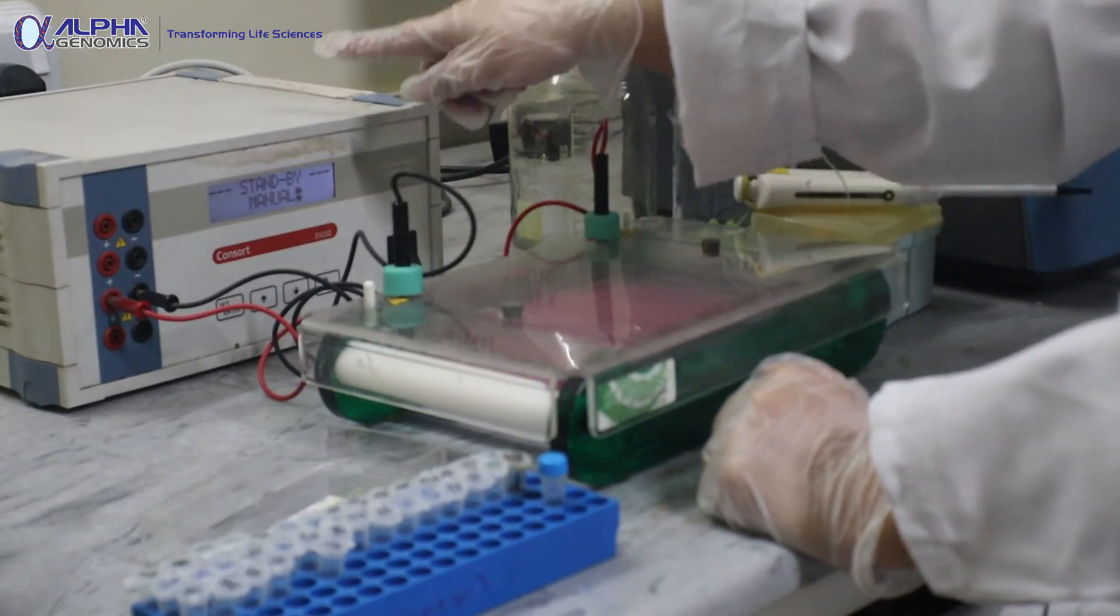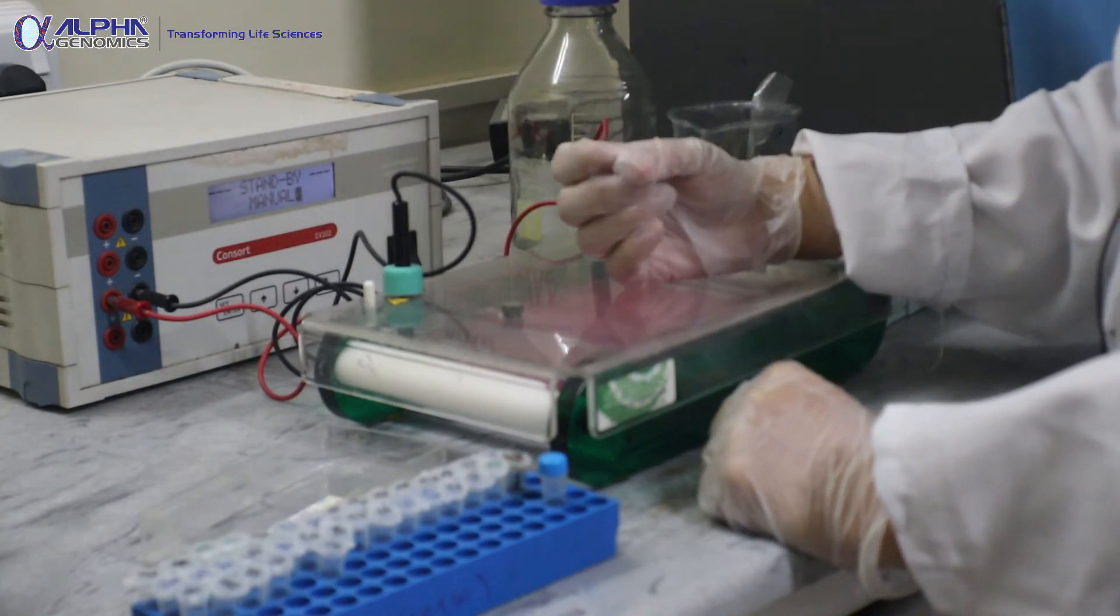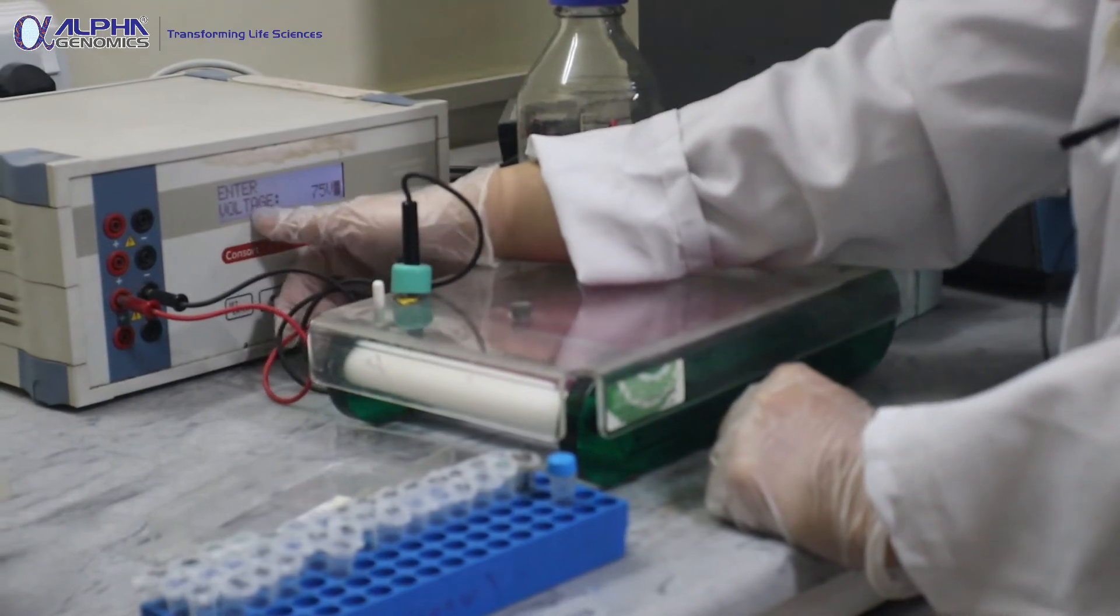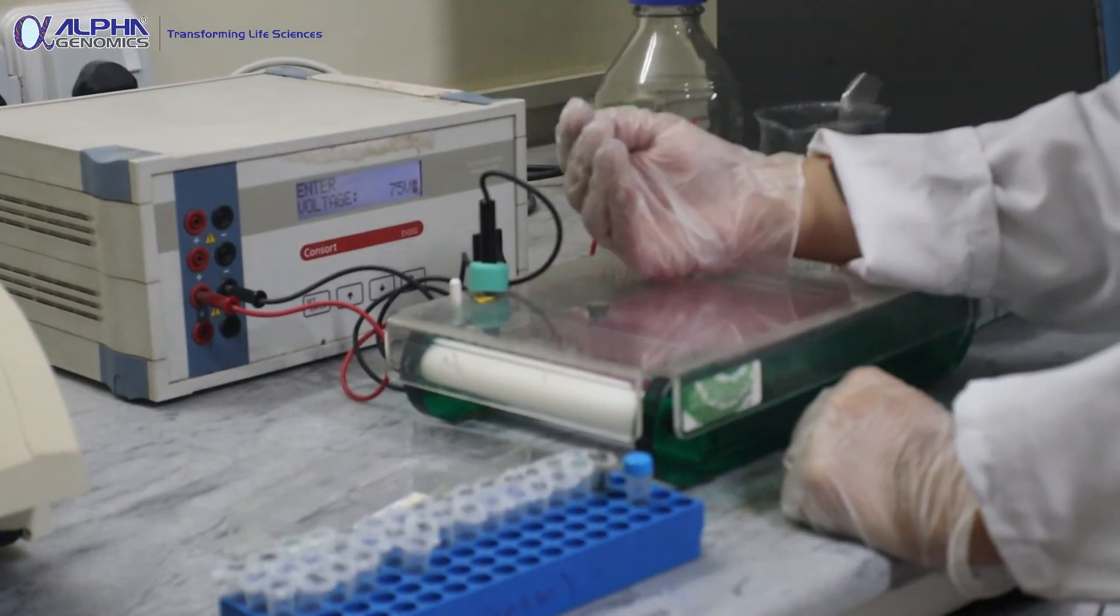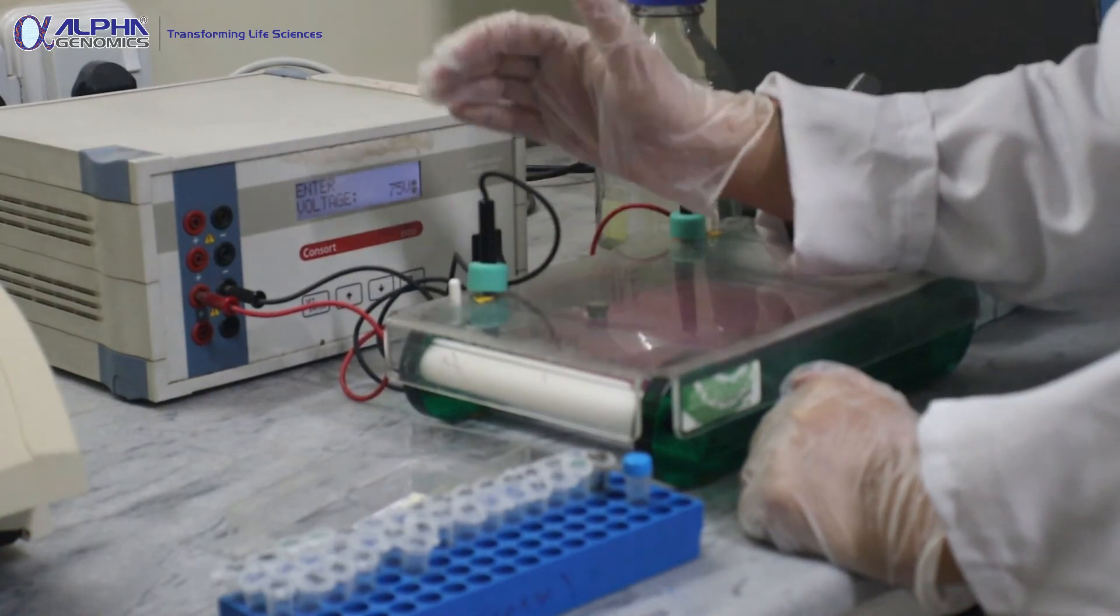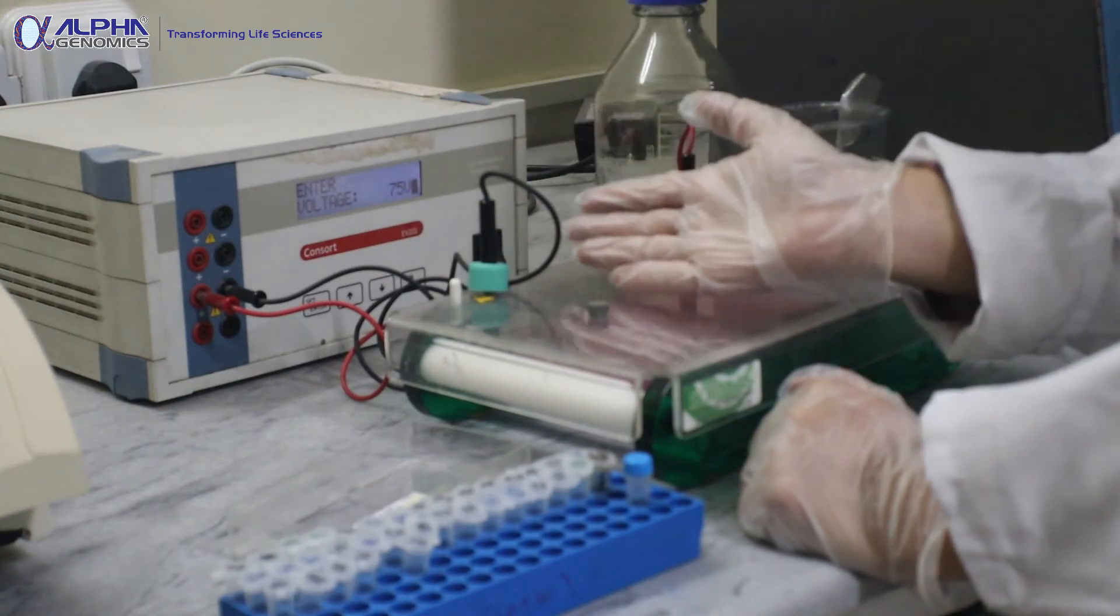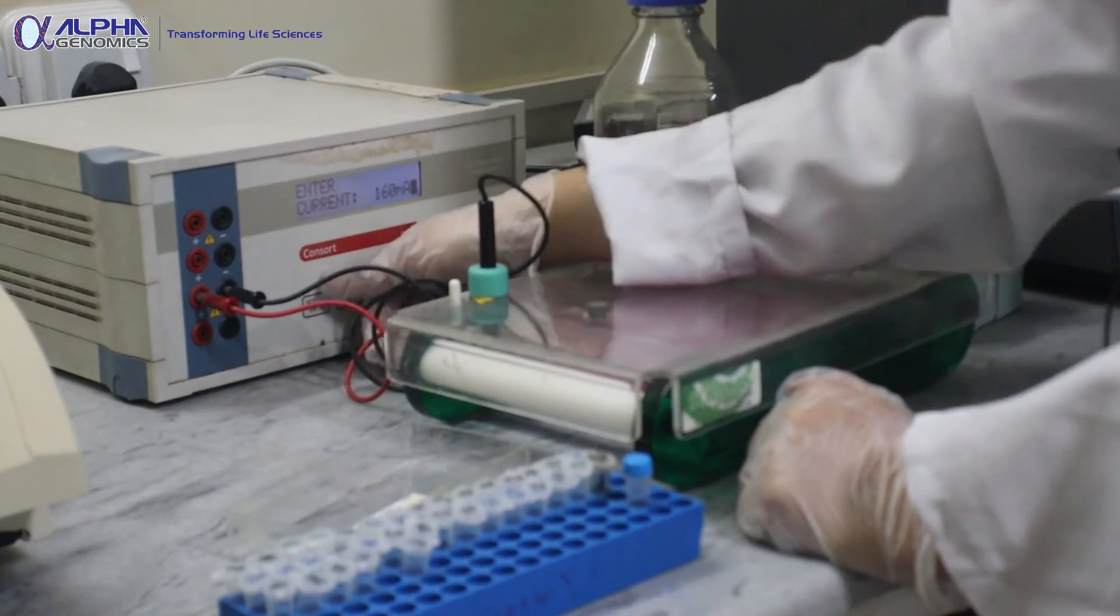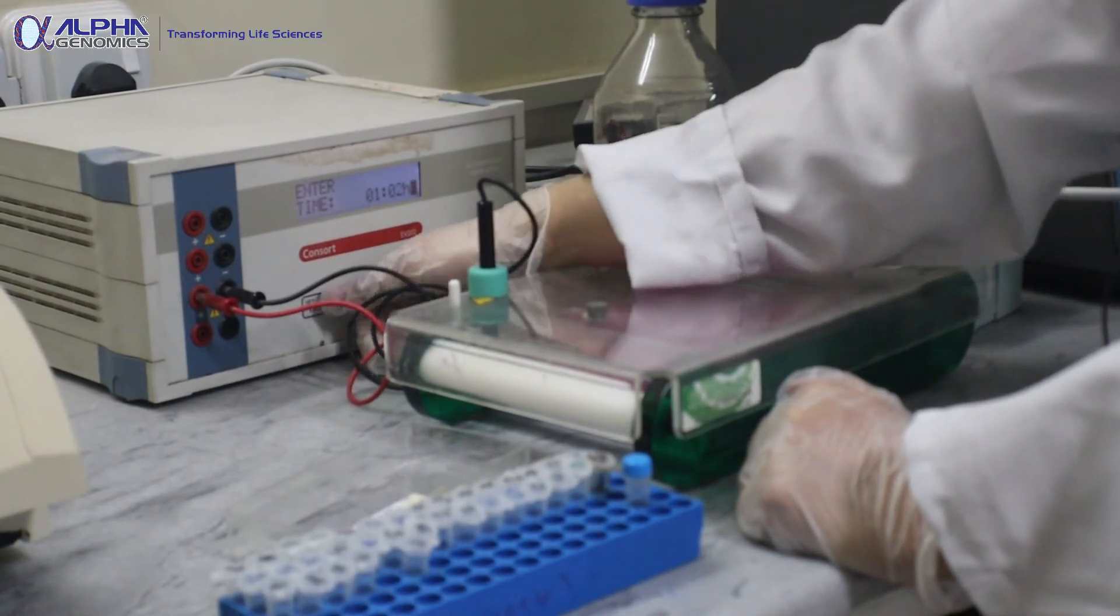DNA is heavier in nature. Now I'll set different parameters for running the gel. The voltage we normally use is 75 volts. Why is it 75 volts and not 100 or something? Because DNA is heavier so it requires a low charge and the time duration must be quite enough for its movement across the gel. I have set voltage as 75 volts, current at 160 milliamperes, power is 300 watts. Time I usually keep for one hour - one hour is enough time for a DNA molecule to move.